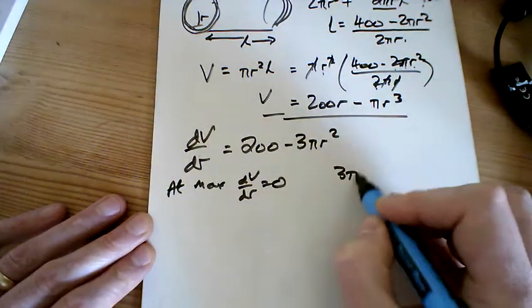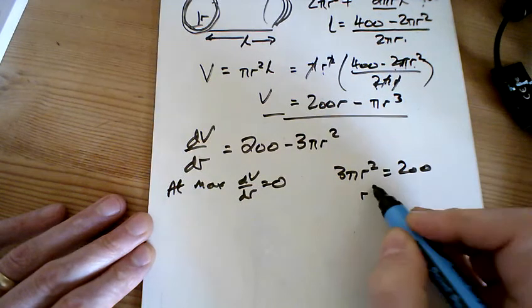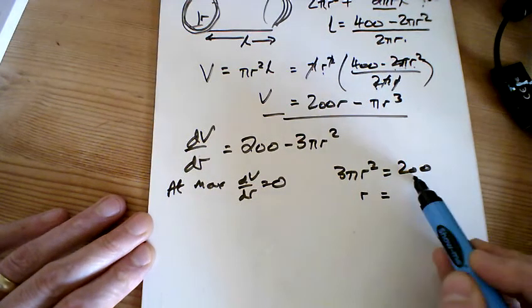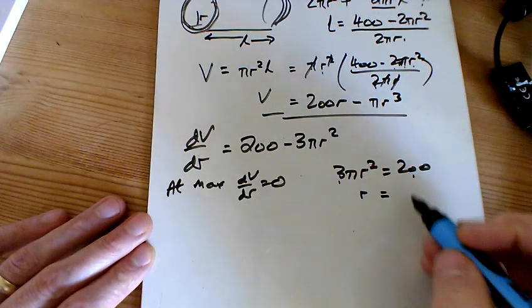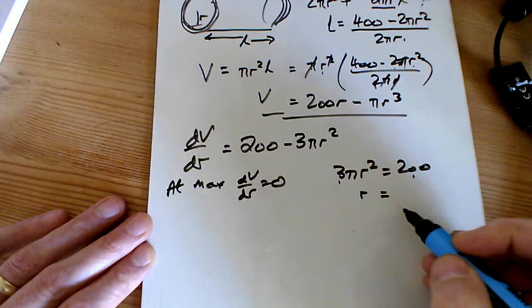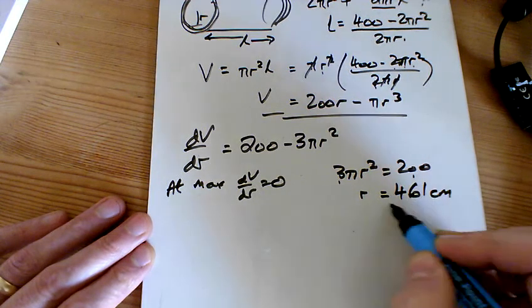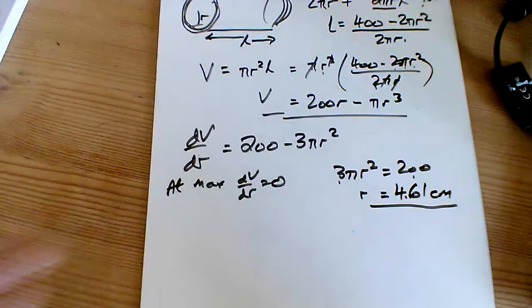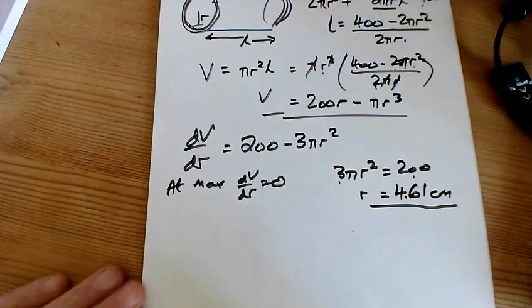And so 3πR² is equal to 200. And R is equal to 200 divided by 3π square rooted. That works out to be 4.61 centimeters. You could say plus or minus, but clearly the radius could never be negative. So I've got 4.61 centimeters.